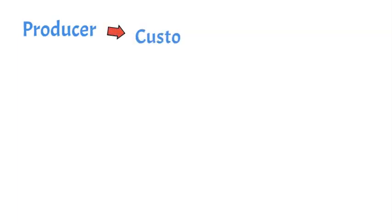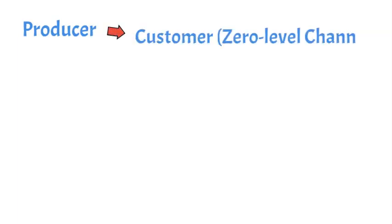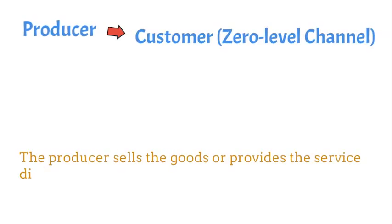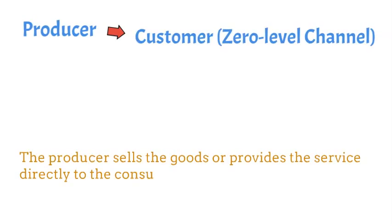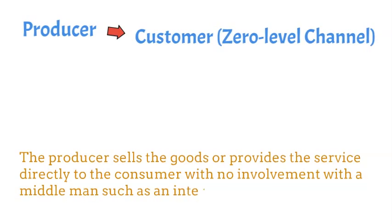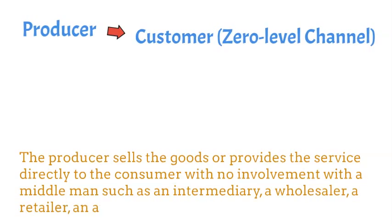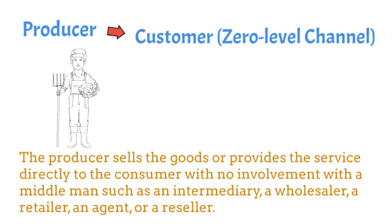Zero-level channel: Producer to Customer. The producer sells the goods or provides the service directly to the consumer with no involvement of a middleman such as an intermediary, a wholesaler, a retailer, an agent, or a reseller. A direct or zero-level channel is one in which the manufacturer sells directly to the end-user with no intermediaries involved.